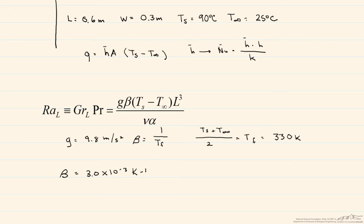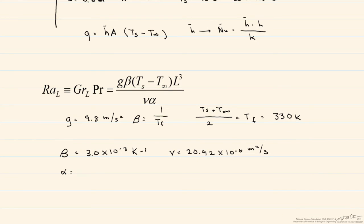We need to look up the kinematic viscosity, which is 20.92 × 10⁻⁶ m²/s. We also look up alpha, the thermal diffusivity, which equals 29.9 × 10⁻⁶ m²/s.